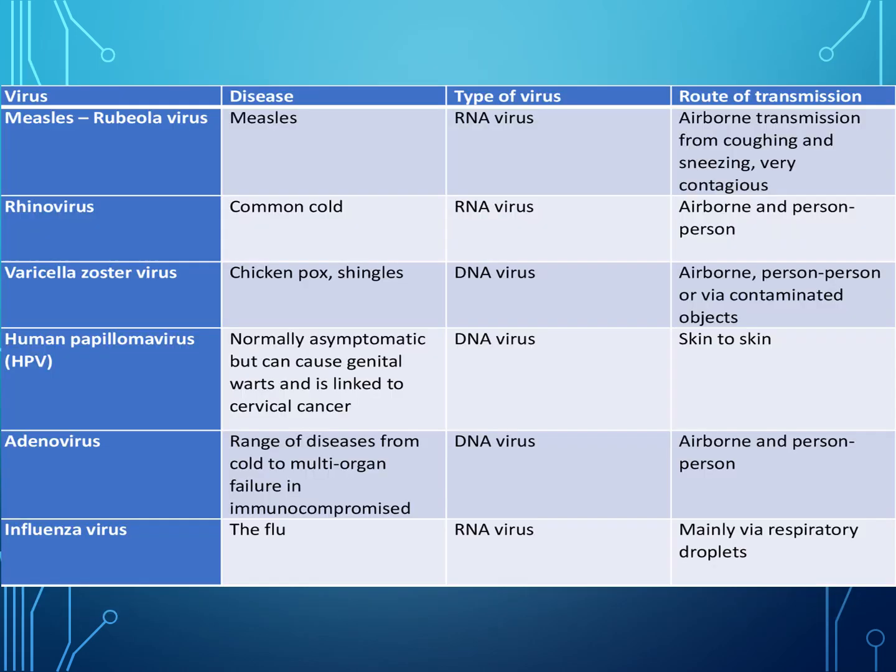Here is a table of viruses similar to the bacteria section. Measles, rhinovirus, varicella zoster virus, human papilloma virus, adenovirus, and influenza virus — showing the diseases they cause, their type (RNA virus, RNA virus, DNA virus, DNA virus, DNA virus, RNA virus), and their routes of transmission: airborne via coughing and sneezing, airborne person to person, airborne via contaminated objects, skin to skin, airborne person to person, and mainly via respiratory droplets. For airborne pathogens in laboratories, CL3 (category 3) laboratories are required. There are different containment levels — CL1, CL2, CL3, CL4, CL5 — depending on how dangerous the pathogen is.